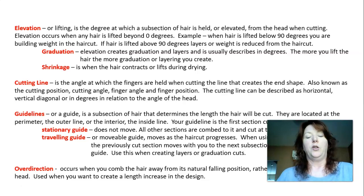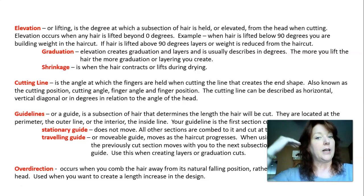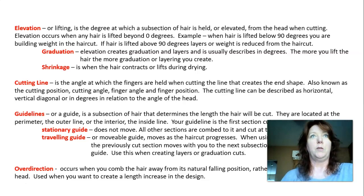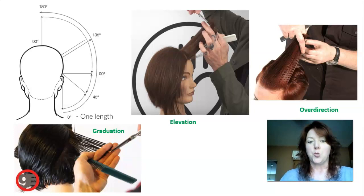Over direction occurs when you comb the hair the opposite way of its natural falling position. For example, hair on the side of the head grows and falls down, so if you pick it up and bring it 90 degrees over the top of the head, you are over-directing it — putting it in the opposite direction it's supposed to go. Over direction is used when you want to create length in a design or when creating layers to keep length.